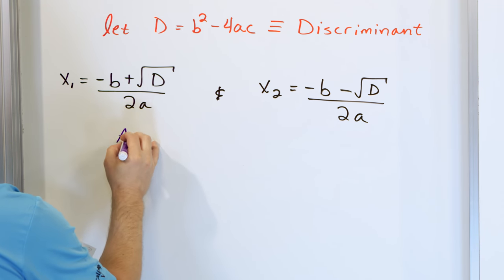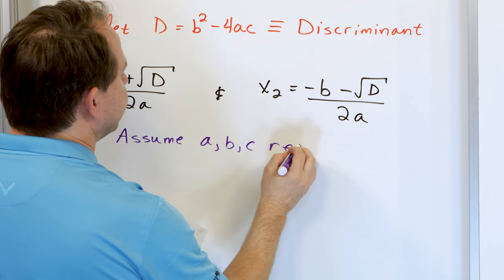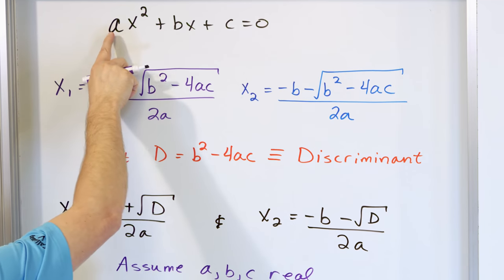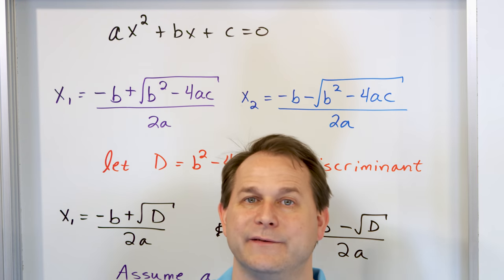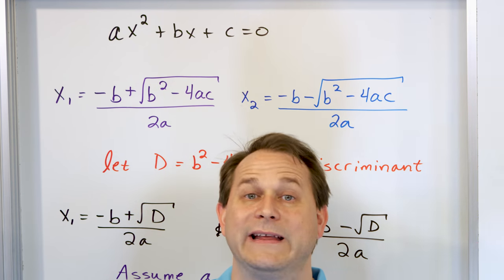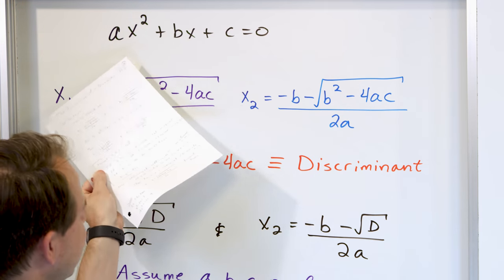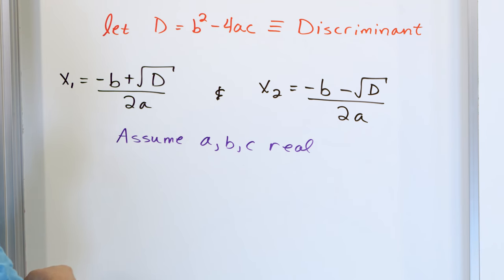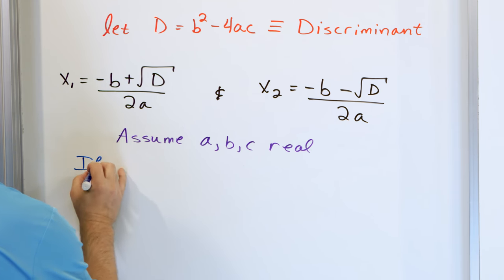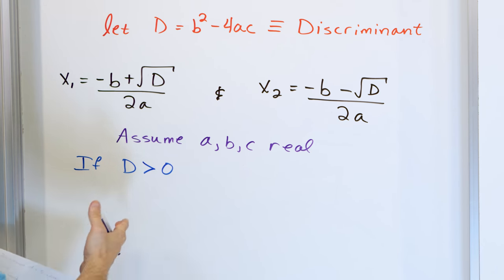We're going to assume here that A, B, and C are real. By that I mean the coefficients in front of all the parts of my polynomial are real numbers — they can be negative, positive, fractions, decimals, or square roots, but they can't be imaginary. So for now let's assume they are real numbers. Then we have basically three main cases. The first case is if this discriminant is greater than zero — meaning it's a positive number.